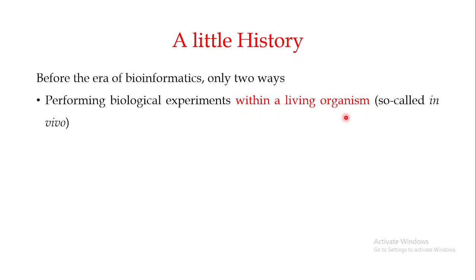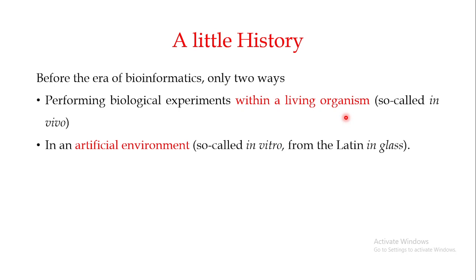The other way biologists were doing experiments was in an artificial environment, known as the in vitro environment. In vitro comes from the Latin meaning 'in glass,' because you are doing experiments in the lab — using petri plates, glasses, and beakers. So in vitro means outside a living environment, while in vivo means within a living organism.